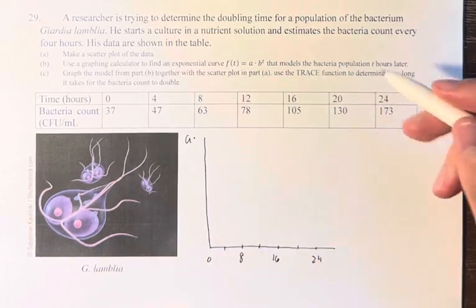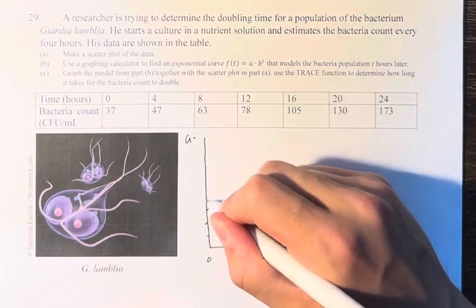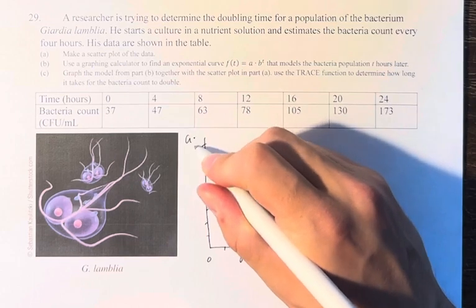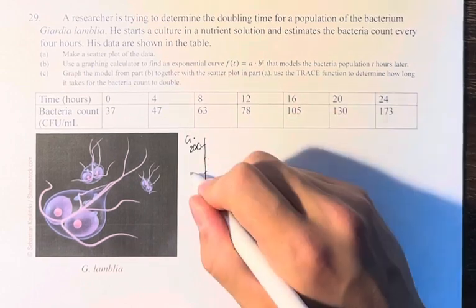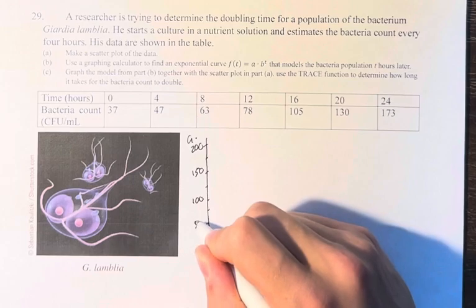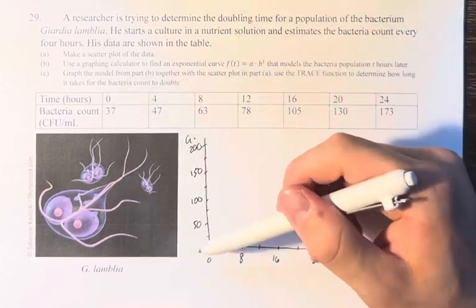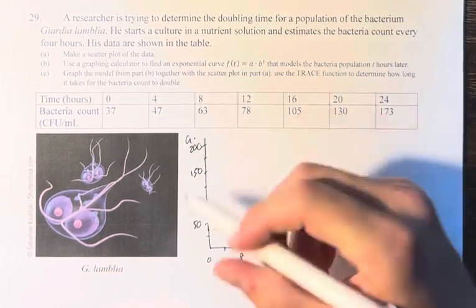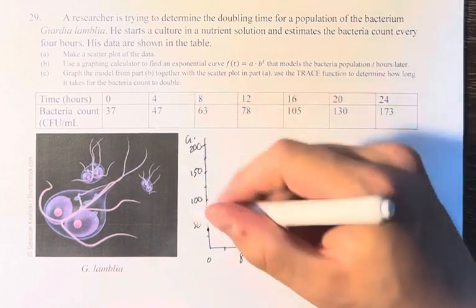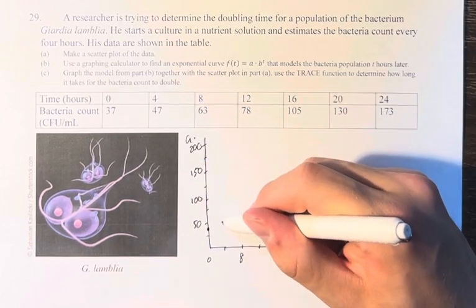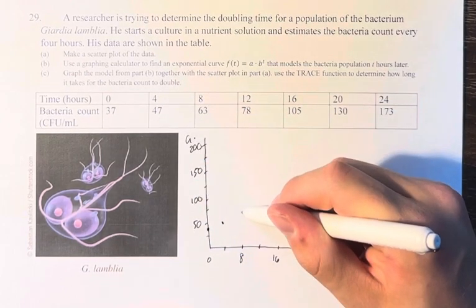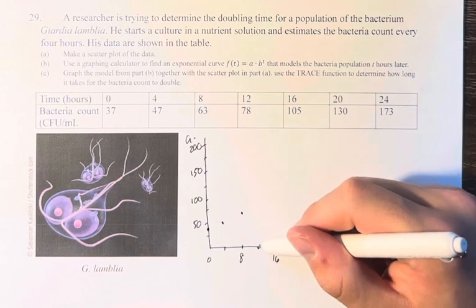And on the y-axis, let's go up to 200. Now we just have to fill in our points. We're at 0, 37, then 4, 47, then 8, 63, then 12, 78.